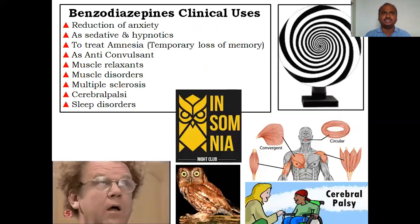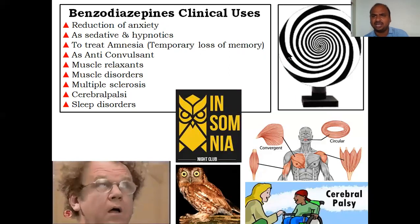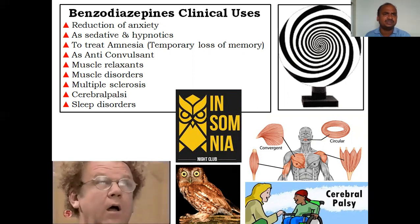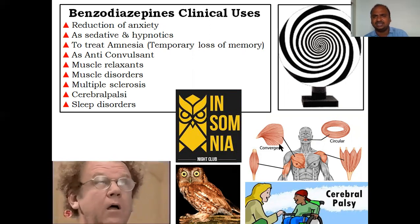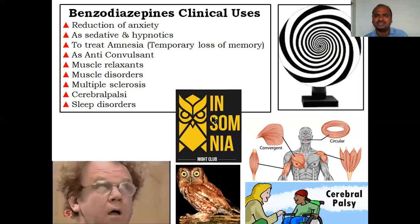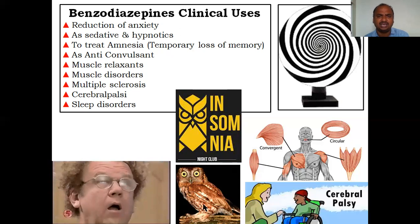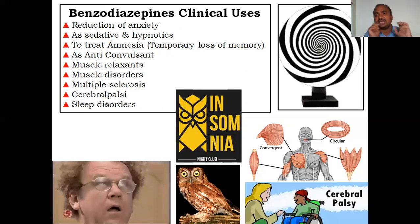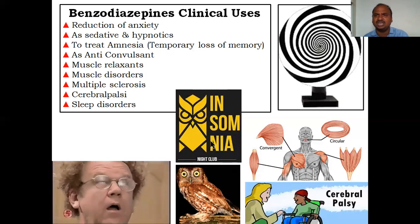Clinical uses of benzodiazepines: they reduce anxiety; they are used as sedatives and hypnotics; they treat amnesia (temporary loss of memory); they are anti-convulsants — that is why benzodiazepines are very good; they act as muscle relaxants for skeletal muscle disorders, multiple sclerosis, and cerebral palsy; and they are used for sleep disorders like insomnia — sleeplessness. So benzodiazepines are the top number-one choice.